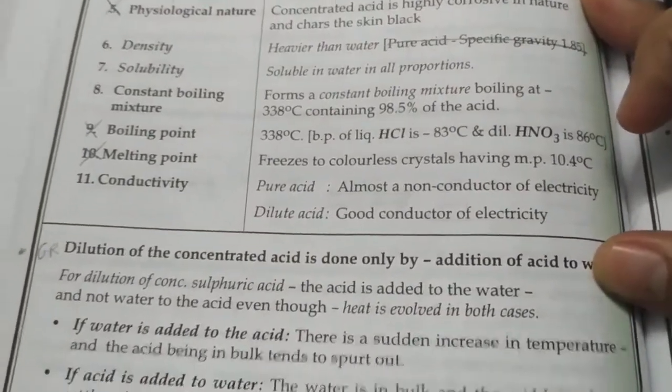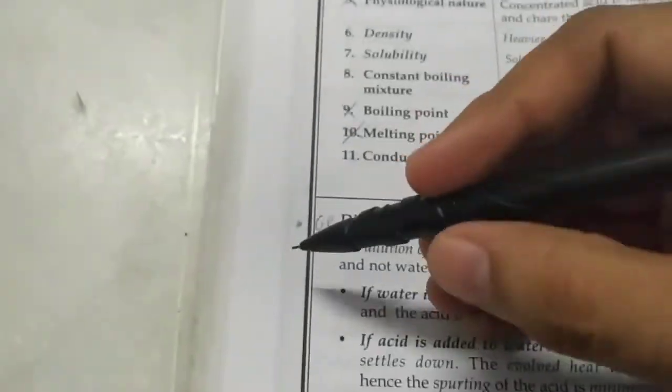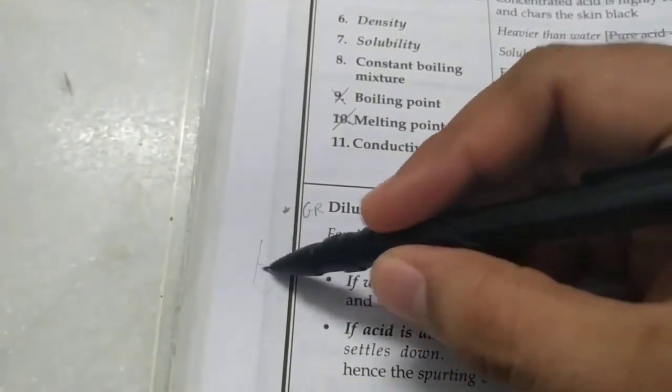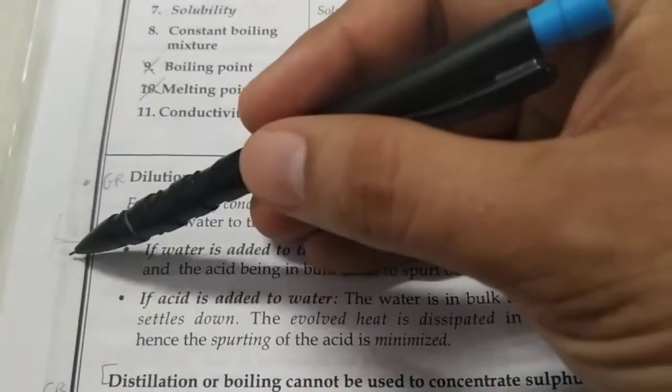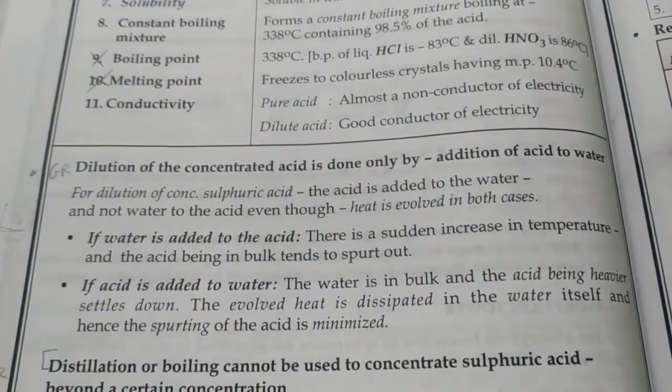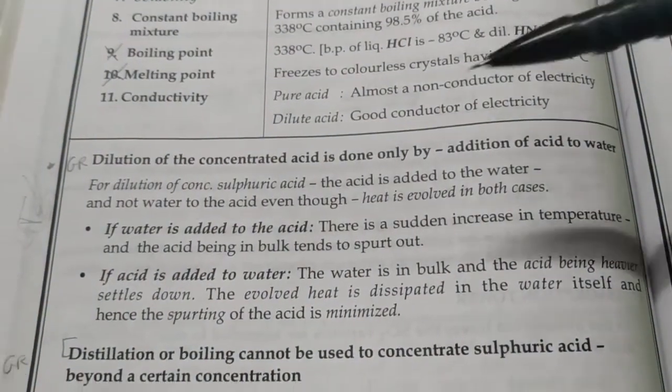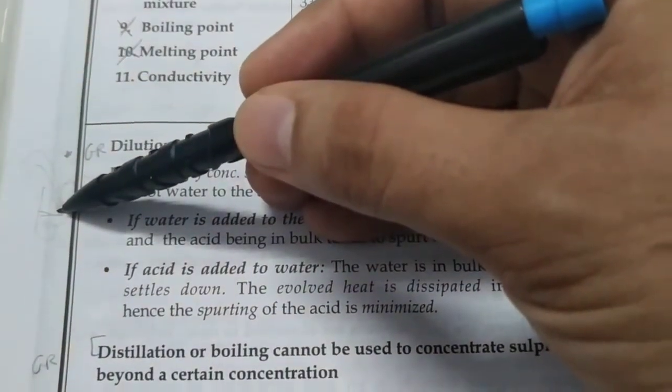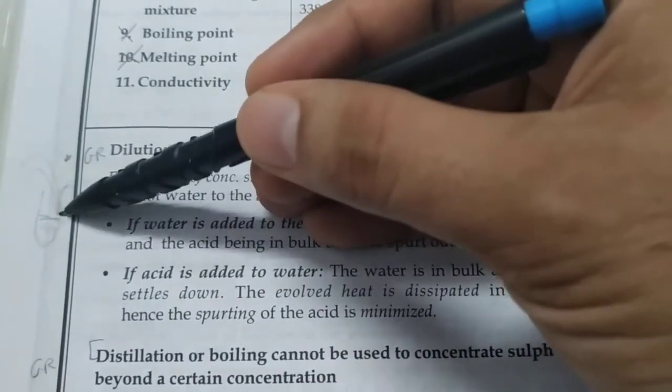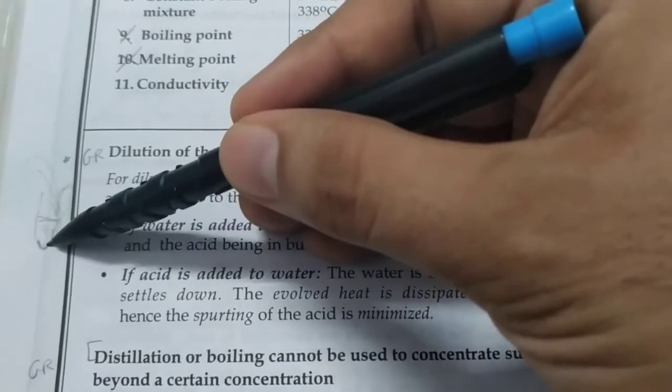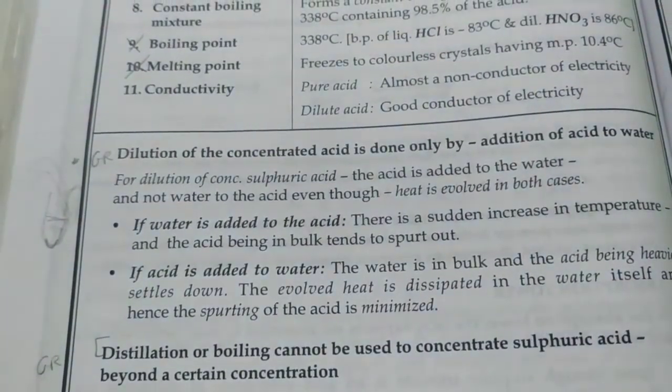How do we dilute sulfuric acid? Do not add water to the acid, instead add acid to the water. If you add water to sulfuric acid, it's an exothermic reaction and the acid will just spurt out. On the other hand, if you add acid to water, water will be in greater quantity, so the little bit of acid will quickly settle at the bottom since it's denser than water. This will be exothermic but at least the acid will not spurt out, hence this will be safer.